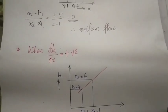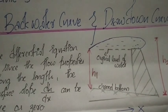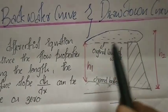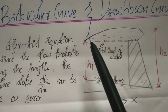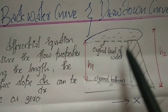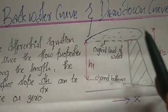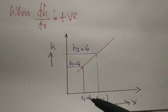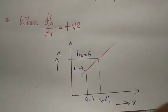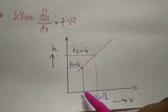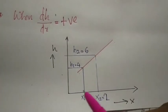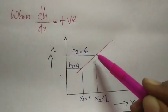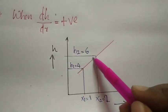Next, when dh/dx is positive, this is gradually varied flow. The water level gradually increases along the direction of flow. For example, at x1 equals 1, the height h1 is 4, and at x2 equals 2, the height h2 is 6.